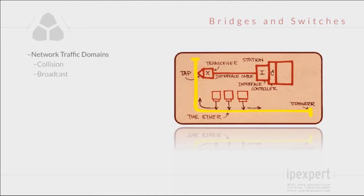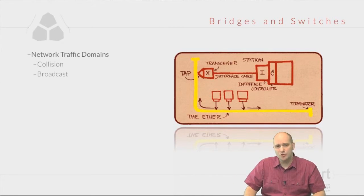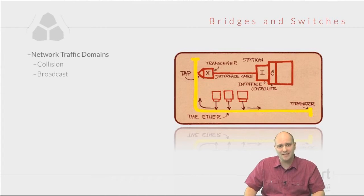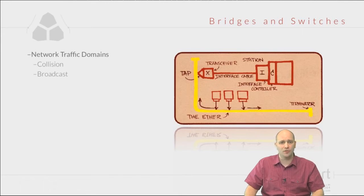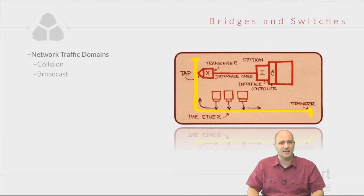When we talk about network traffic domains, we are really talking about the collision domain and the broadcast domain. The picture behind me is the original drawing for the Ethernet network — the drawing made at the Xerox Palo Alto Research Center — showing how different stations connect to a sticky yellow cable. This is how Ethernet was originally envisioned as a bus type architecture.